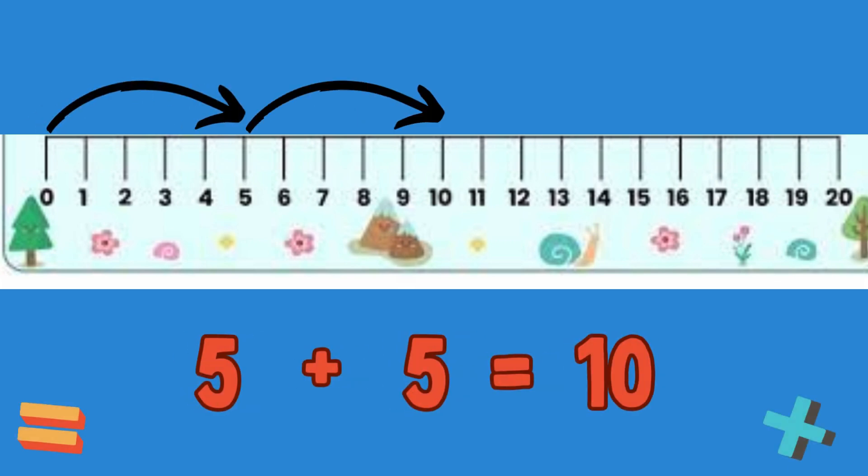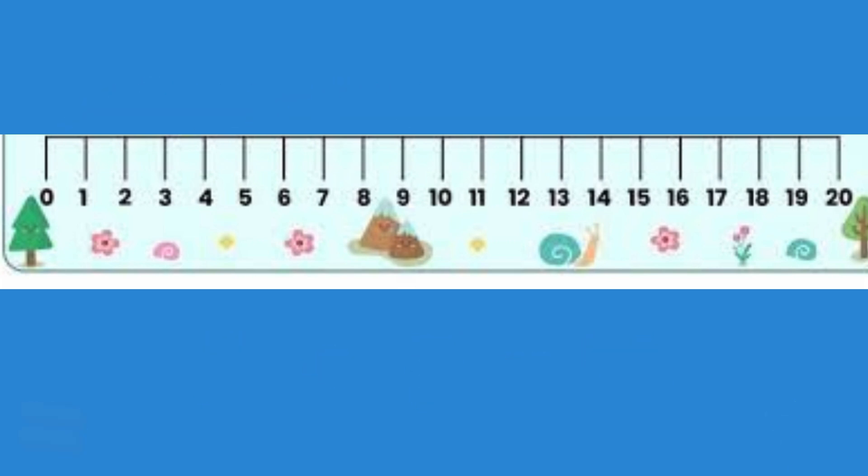Count 5 on the number line, then count 5 more numbers — you will reach number 10. 5 plus 5 is equal to 10. I hope you have learned how to add numbers and get the total. Keep watching this video for more practice.